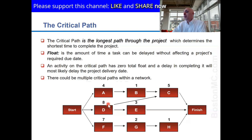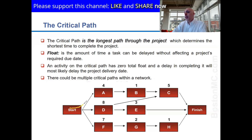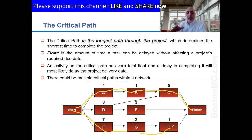If you treat this like a maze, there are network paths through the diagram. There's a path that goes from Start → A → B → C → Finish. There's another path along the bottom that also leads to the finish line. All paths need to be completed. Looking at the top path, four plus one equals five, and five plus five equals ten days total.